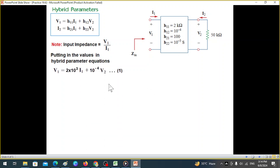Now let's plug in the values in the first equation. H11 from here, 2 kilo or 2 times 10 to the power 3. And similarly, H12 is 10 to the power minus 4. H12 is 10 to the power minus 5 Siemens.